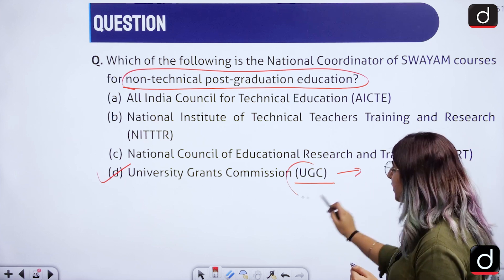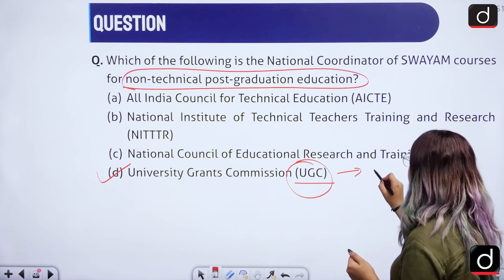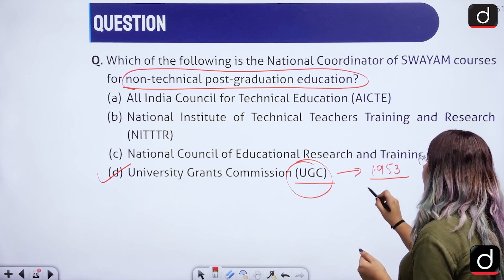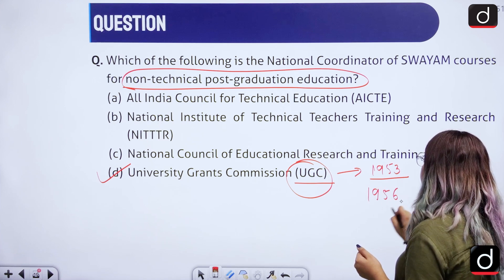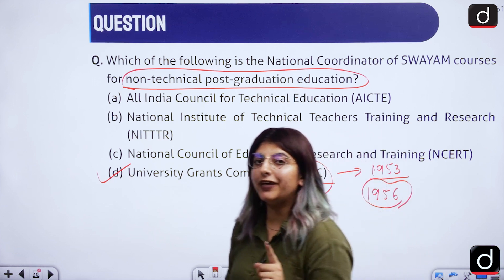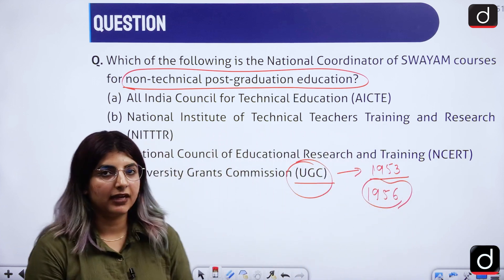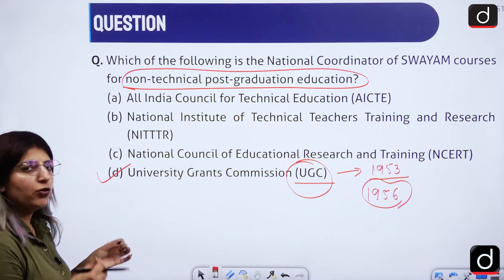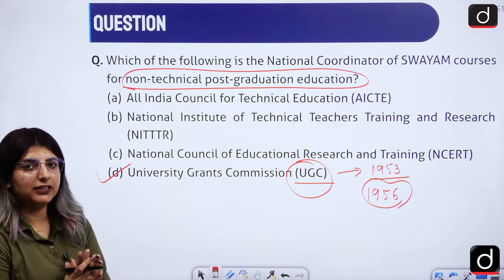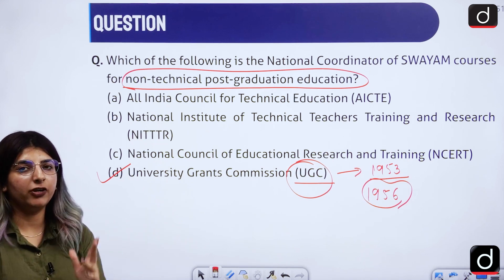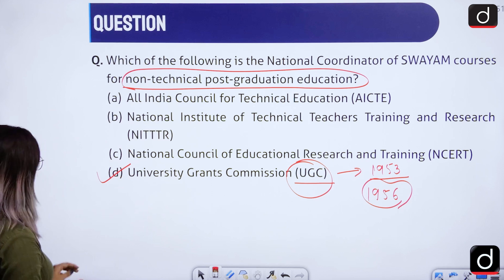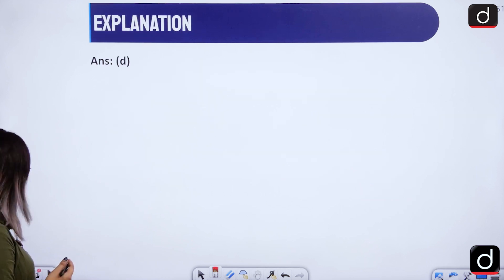A quick basic fact: the University Grants Commission — UGC — was founded in 1953 and was later granted the status of a statutory body in 1956. These minor details are important to keep in mind if such straightforward questions appear. So, option D is the right answer.